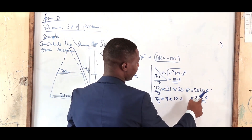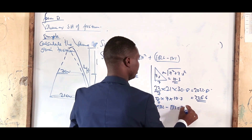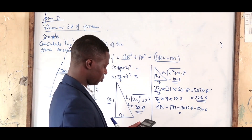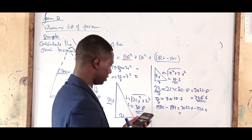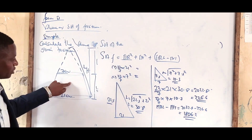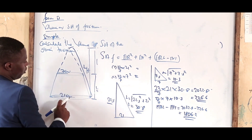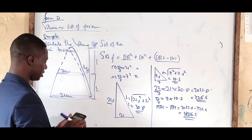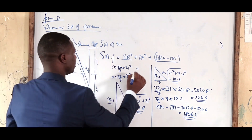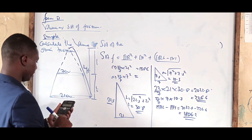We subtract: 2032.8 − 226.6 = 1806.2 cm² for the curved surface. The lower circular area equals 22/7 × 21² = 1386 cm², and the upper circular area equals 22/7 × 7² = 154 cm².